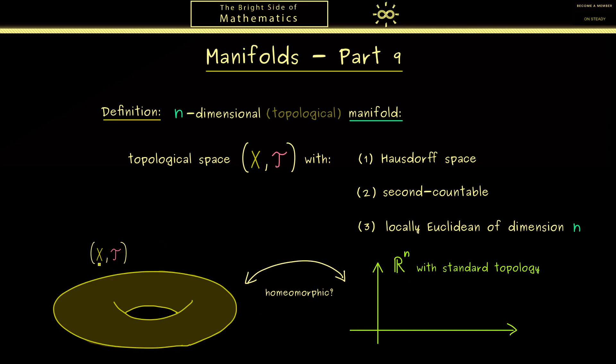So if we have a map from X to R^n that is continuous and bijective such that the inverse is also continuous, then we call the two spaces homeomorphic. Now in this example, when we think of the surface of the donut here and R^2 on the right-hand side, we quickly see there can't be such a map. And of course we don't need that because we want the property only locally.